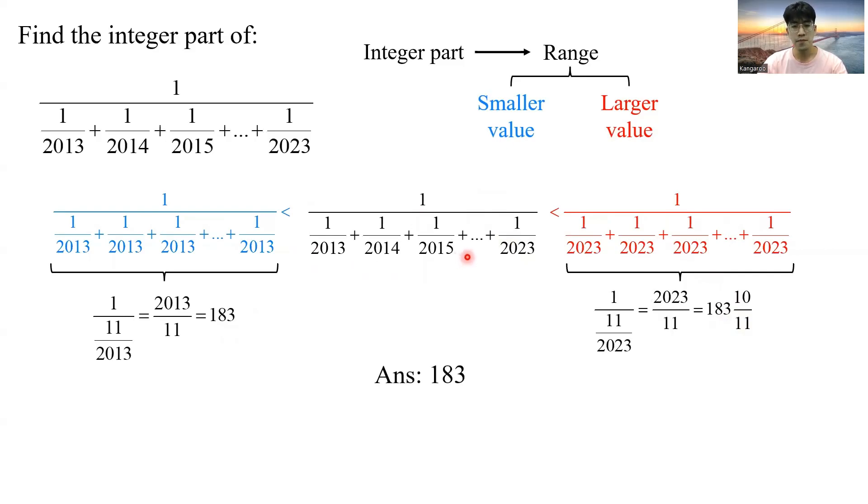So the most important thing about this question is that in order to find integer part of this huge fraction, there's no need to find its exact value. You only need to find the range. You need to find the smaller value and the larger value. And then this fraction will fall between the range. That's how you solve this problem.